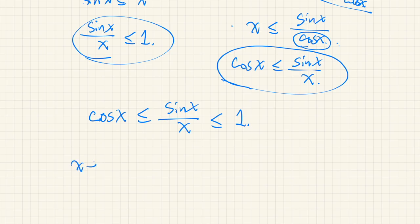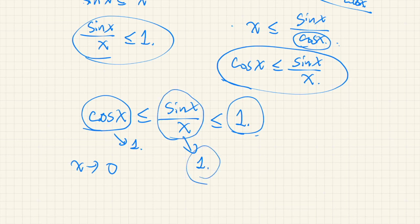Now, if we move x towards 0, then cosine x converges to 1. So by the squeeze theorem, we can say that sin x over x converges to 1, and we are done. So now we have proved that this limit is 1 without using L'Hôpital's rule, and the circular dependency is absent.